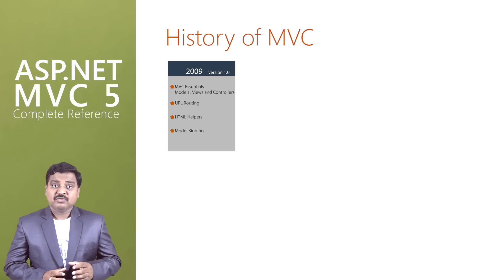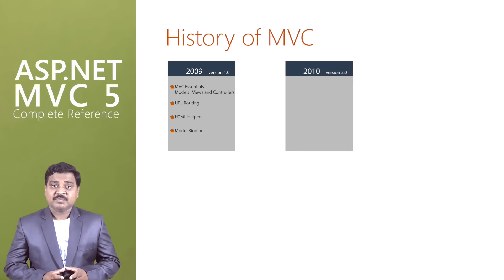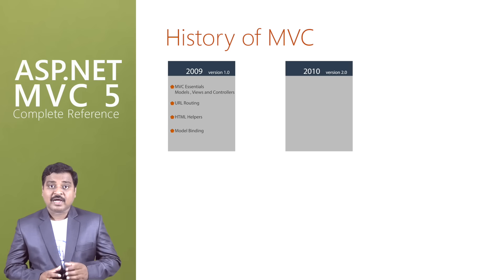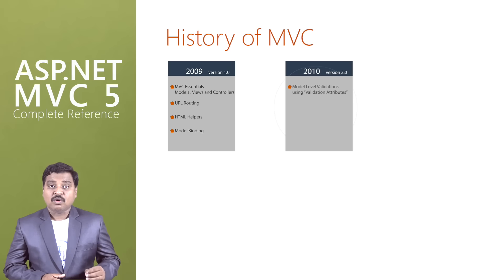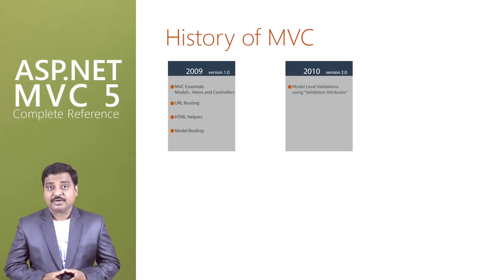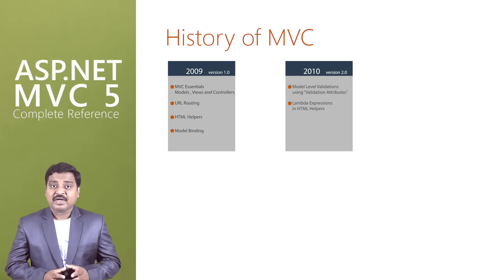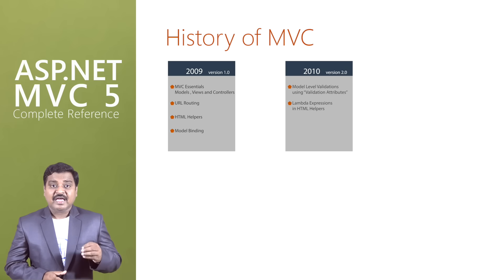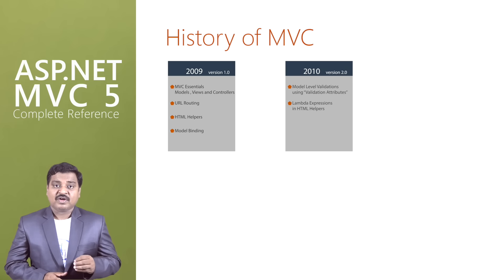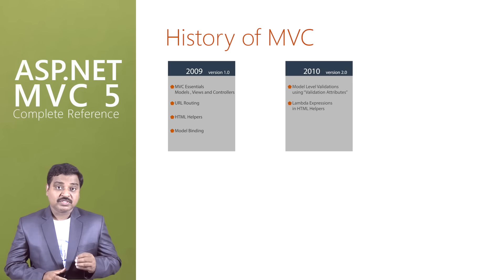And in 2010, ASP.NET MVC 2.0 was introduced with model-level validations using validation attributes and support for Lambda expressions in HTML helpers. ASP.NET MVC 1.0 and 2.0 used web forms for development.